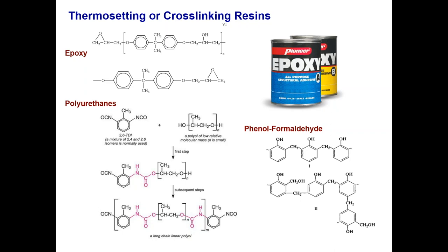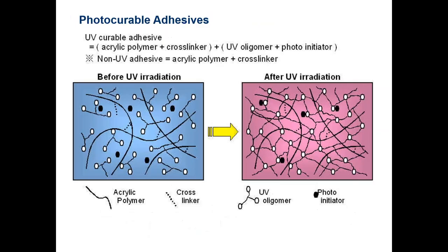Photo-curable resins are very familiar to those who use SLA or stereolithographic apparatus — it involves the use of monomers, initiators, and cross-linkers activated by single-photon polymerization. Very often, the chemistry found in photocurable adhesives or coatings is the same chemistry that can be applied for SLA 3D printing.